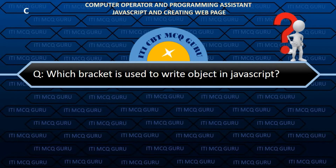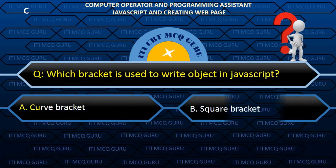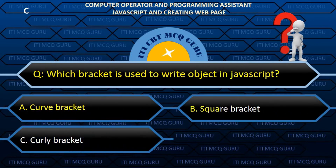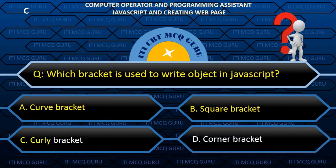Which bracket is used to write an object in JavaScript? C. Curly bracket.